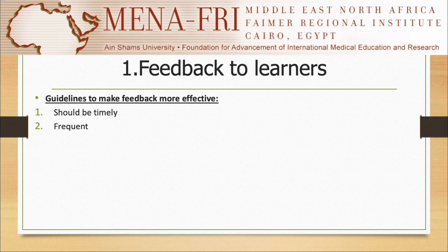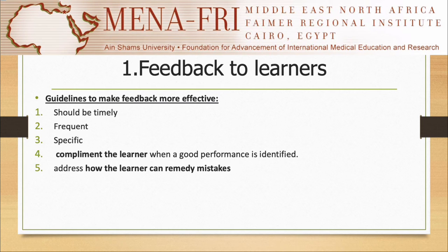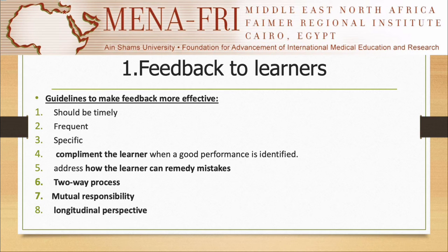Feedback should be timely, frequent, and specific, and should not be limited only to when the student is not performing well. You should also compliment the learner when good performance is identified, and show them how to address and remedy mistakes. Feedback should be a two-way process, not unidirectional — there should be an active conversation between teacher and learner. Feedback is a mutual responsibility. Learners should be encouraged to reflect on feedback received and what they will do following its receipt. It should also be seen from a longitudinal perspective, provided across the curriculum, with learners reflecting on previous feedback and understanding future feedback opportunities. Learners should also be encouraged to assess their own performance.